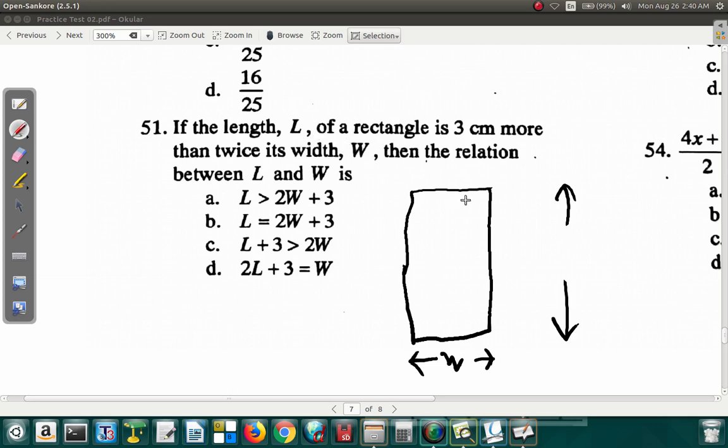The length L is 3 centimeters more than twice its width. So if you twice the width, you get 2W. 3 centimeters more, it means you add 3 centimeters to it. 3 centimeters more than twice the width. Then the relation between L and W is, so the length is equal to 2W plus 3.